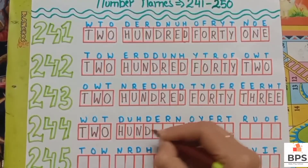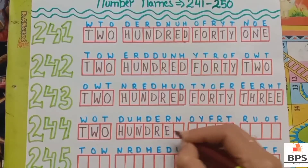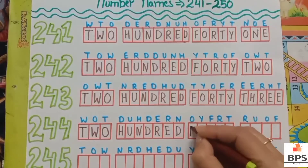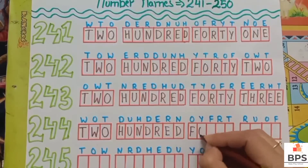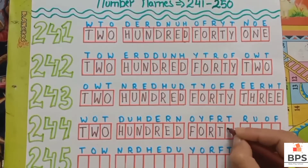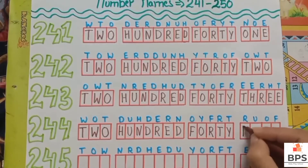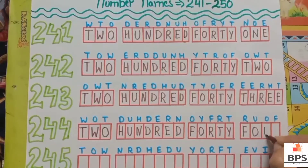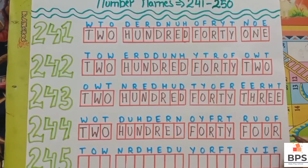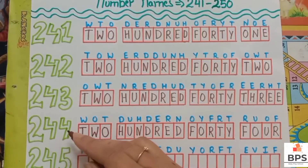Two four four — two hundred forty four. U-N-D-R-E-D, hundred; F-O-R-T-Y, 40; F-O-U-R, 4. Two hundred forty four — 244.